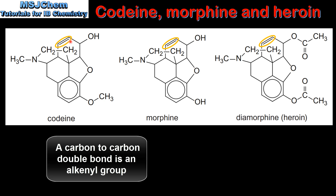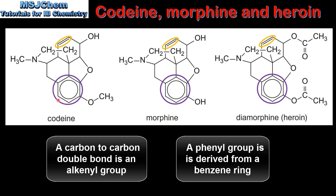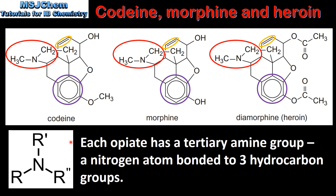The first functional group is a carbon to carbon double bond, which is an alkenyl group. Each molecule also has a phenyl group, which is highlighted in purple. Next, we can see that each opiate has a tertiary amine group, which is highlighted in red. A tertiary amine group is a nitrogen atom bonded to 3 hydrocarbon groups. And finally, we can see that each molecule has an ether group, which is highlighted in blue.